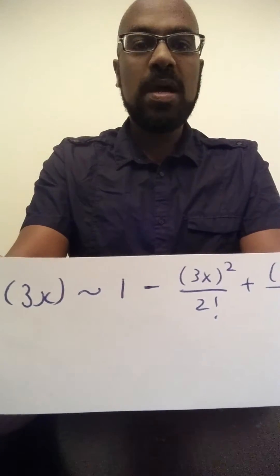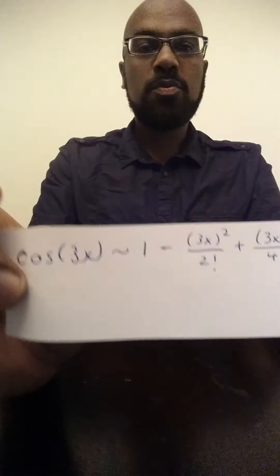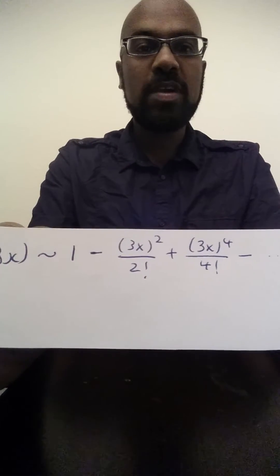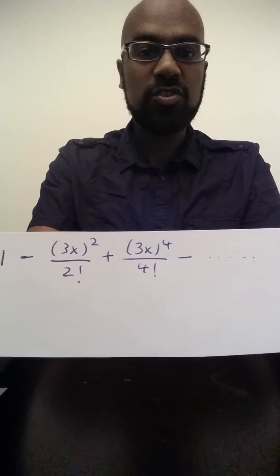So that's 1 minus 3x squared over 2 factorial plus 3x to the fourth over 4 factorial minus and then a whole bunch of extra stuff.